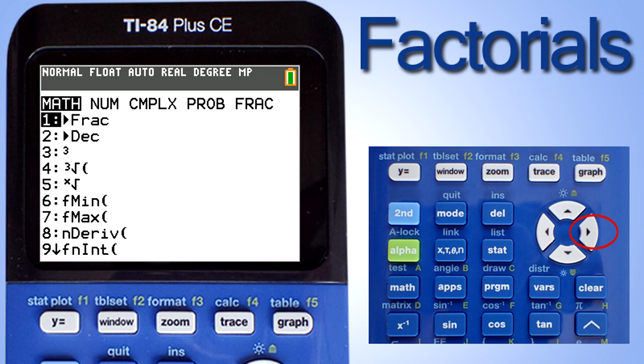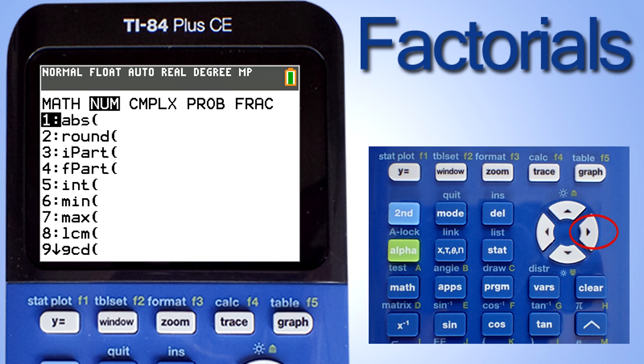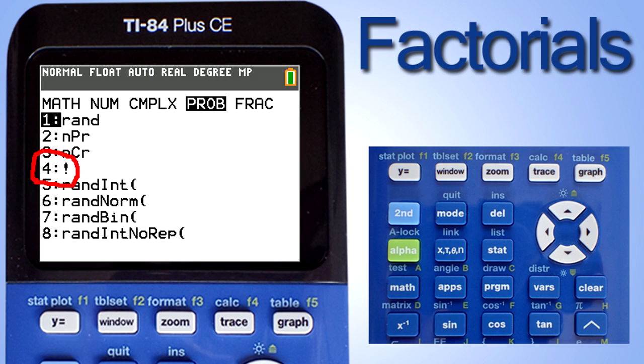Use the right arrow key and go to PROB. PROB stands for probability. And if you look down at the number 4, you will see that exclamation point. That is our factorial symbol. Go down to number 4 and press enter.